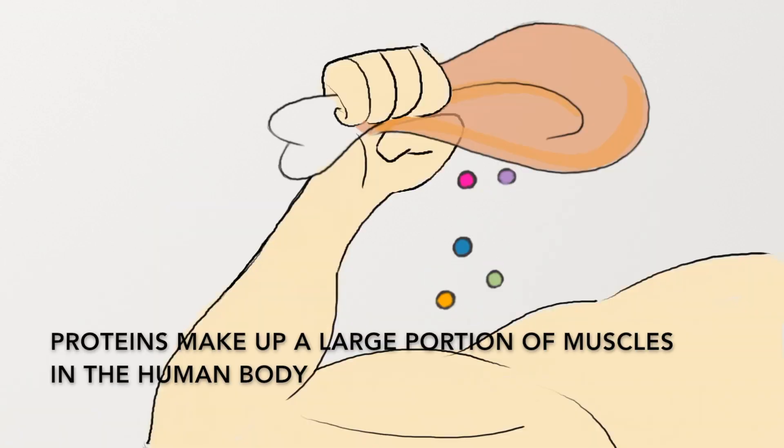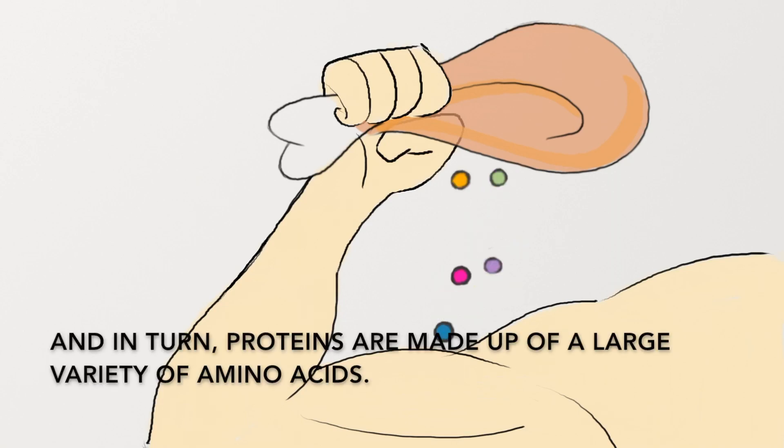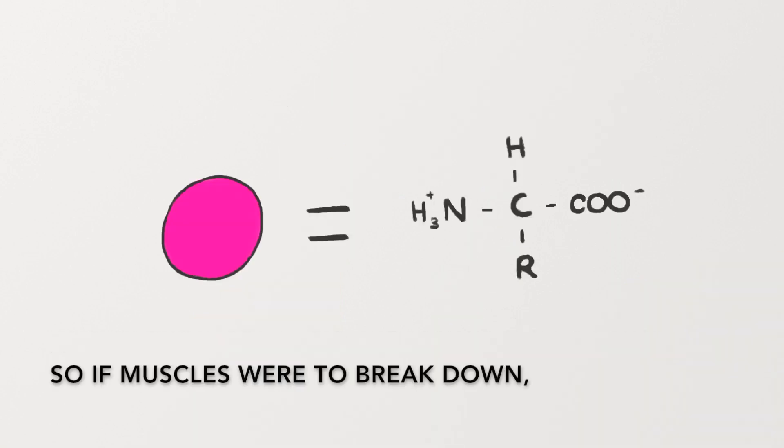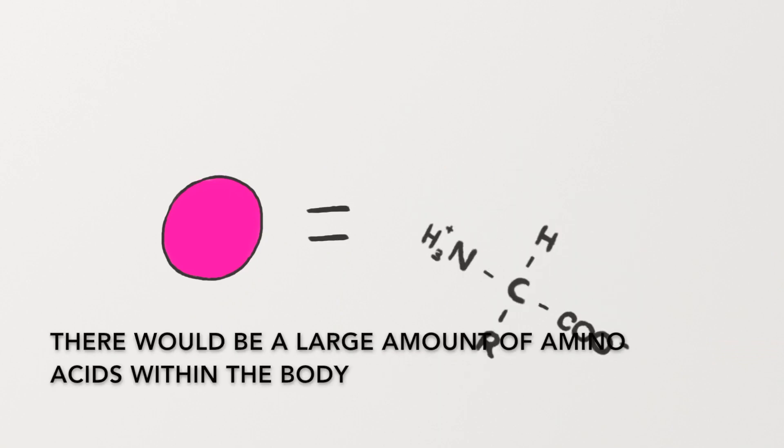Proteins make up a large portion of muscles in the human body, and in turn proteins are made up of a large variety of amino acids. So, if muscles were to break down, there would be a large amount of amino acids within the body.